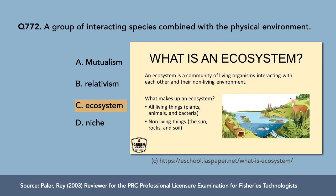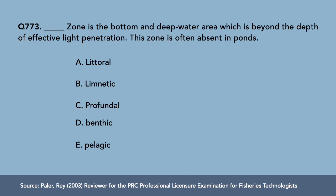What makes up an ecosystem? We have the abiotic factors and the biotic factors. The biotic factors refer to all living things, while the abiotic factors refer to non-living things. So an ecosystem is a community of living organisms interacting with each other and their non-living environment.